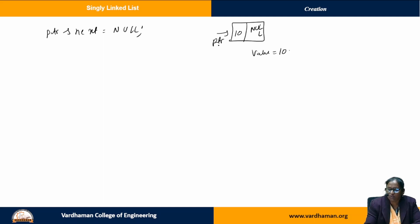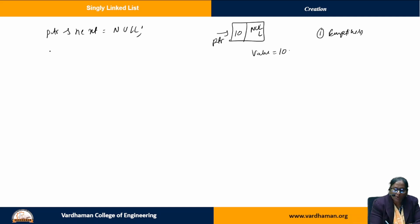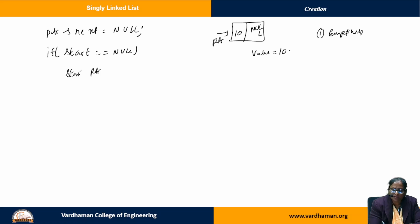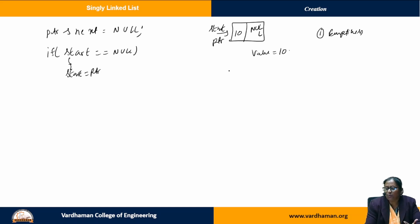This node has to be inserted into the existing list. There may be certain conditions to check — initially there may not be any nodes, or there may be some nodes already, so two cases will be there. I check for emptiness: if the list is empty, start is going to be null. If start is null, whatever node I created is going to be the first node, so start equals PTR. Always the first node has to be pointed by start or head.